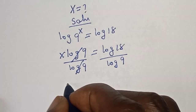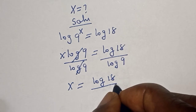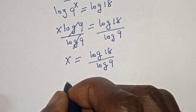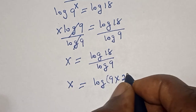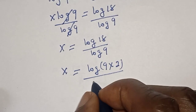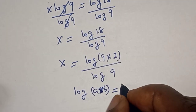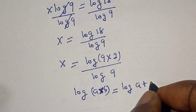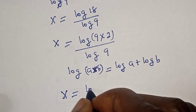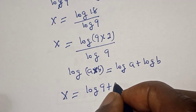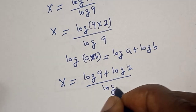This cancels, so s is equal to log 18 over log 9. Then s is equal to log(9 times 2) over log 9. Remember, if you have log(a times b), this is equal to log a plus log b. So we have s is equal to (log 9 plus log 2) over log 9.